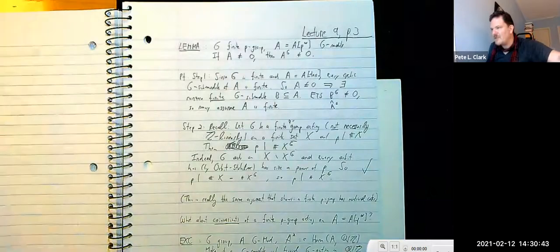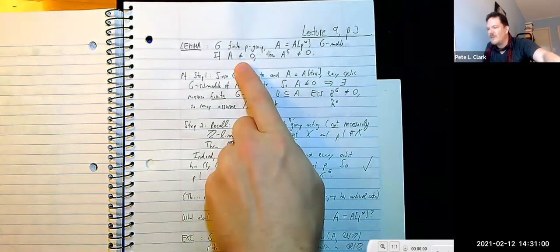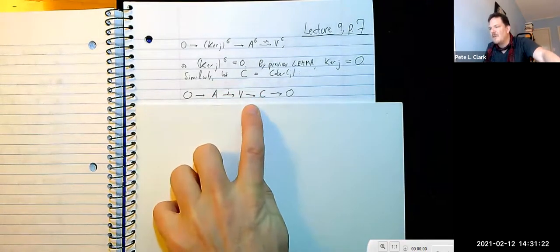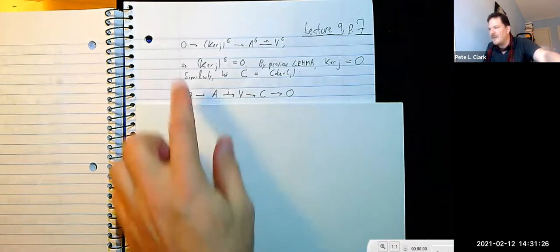This shows the G-invariants of the kernel of j are zero. It would be great if G-invariants being zero implied the whole module is zero. We have exactly that result: whenever a finite p-group acts on a p-primary torsion Z-module, if the G-invariants are zero then the whole module is zero. So the kernel of j is zero — j is injective.